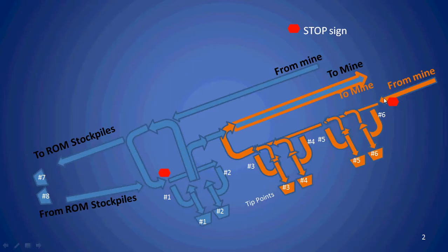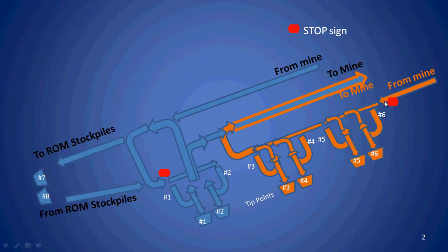Once tipped, the truck may go back out to the run of mine and back to the mine. The same applies when the system is reclaiming off the run of mine stockpiles — a truck is loaded, goes to a tip point, tips, then goes back out to the run of mine circuit. Waste trucks come down from the mine on a separate haul road to a stop sign, where they decide which of four tip points — numbers one, two, three, four, five, and six — to use.